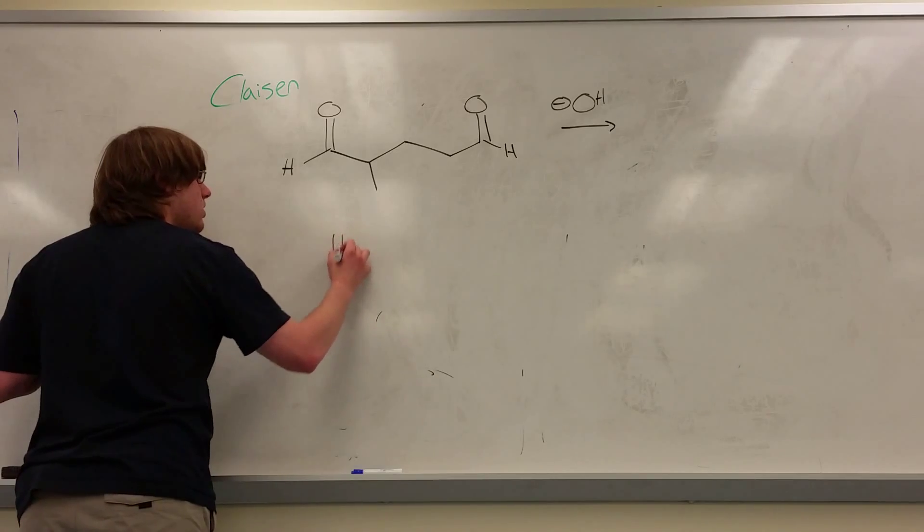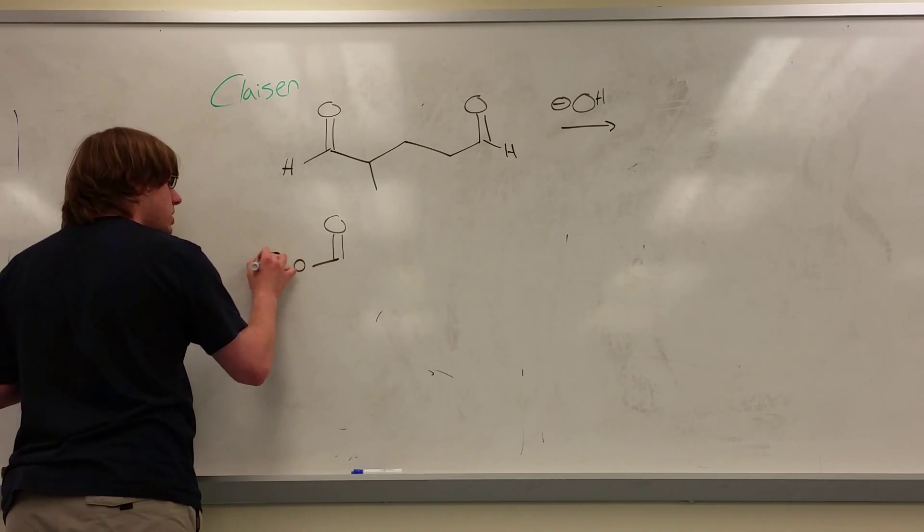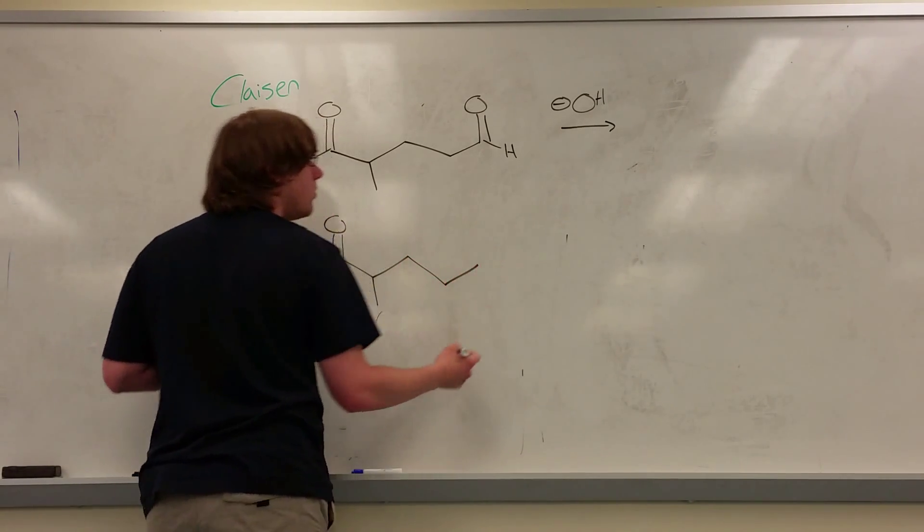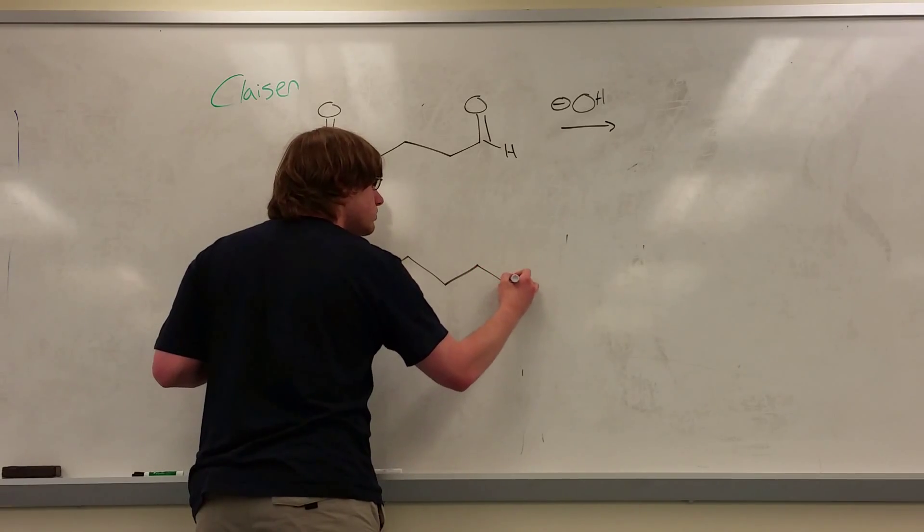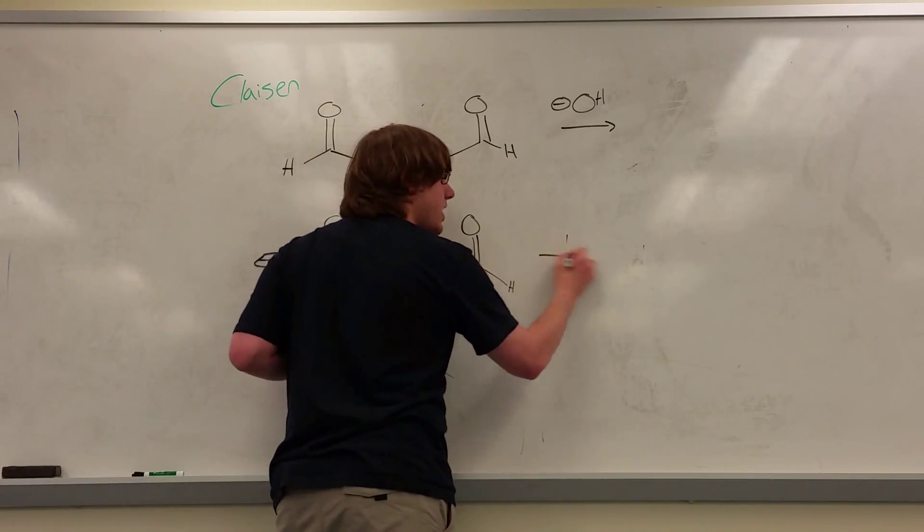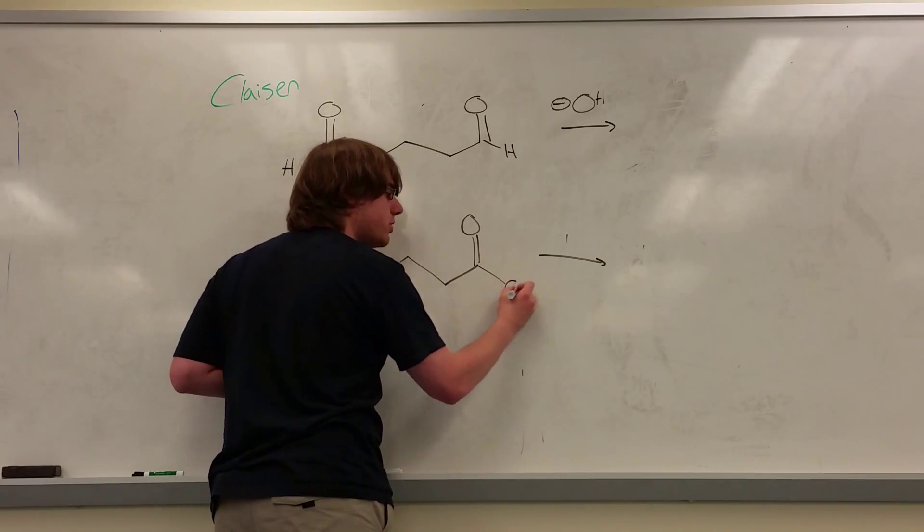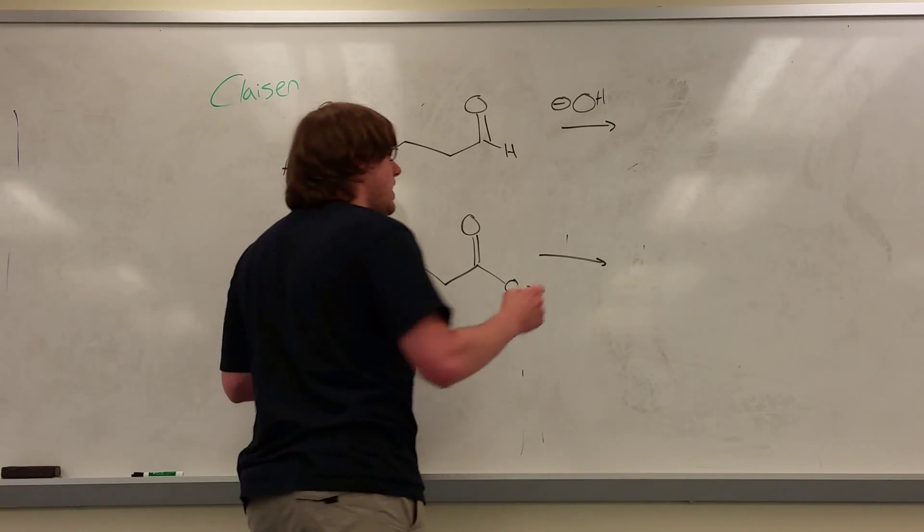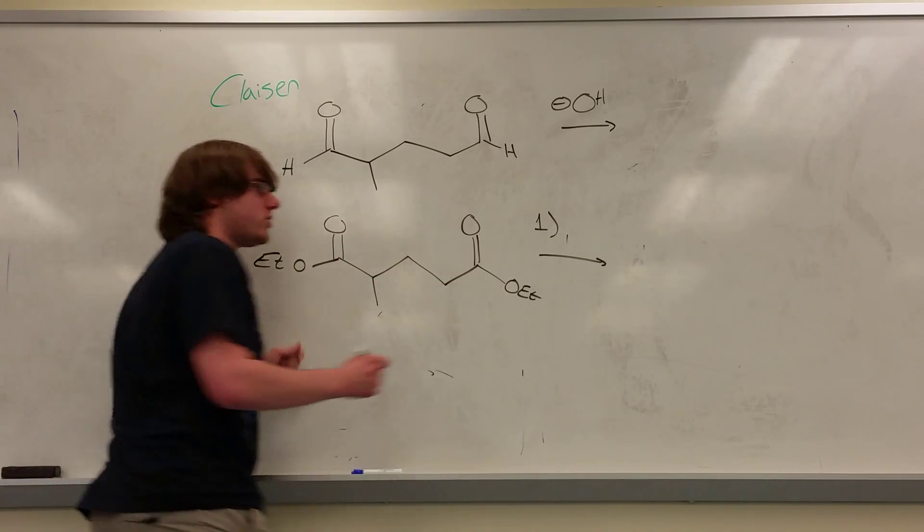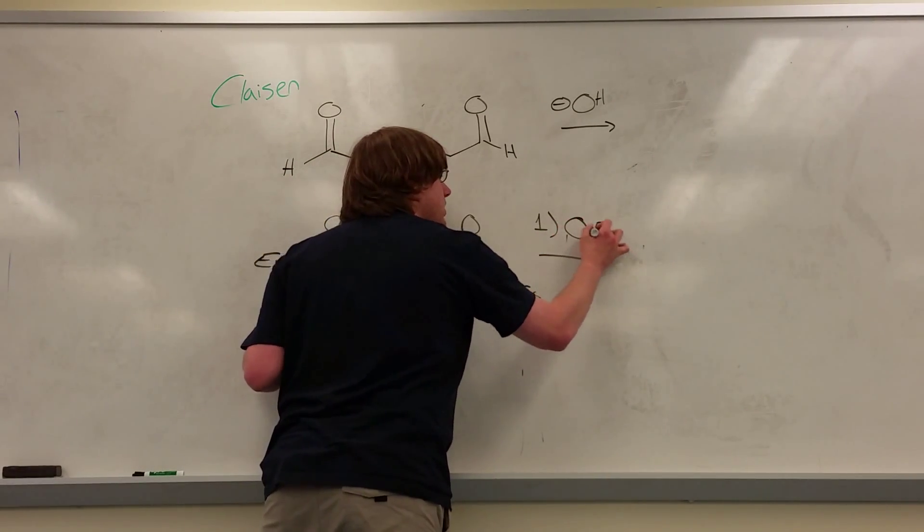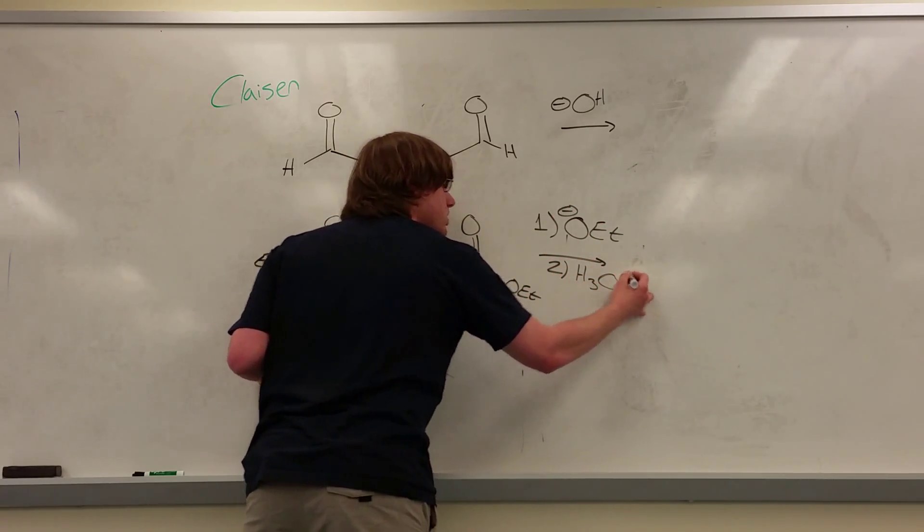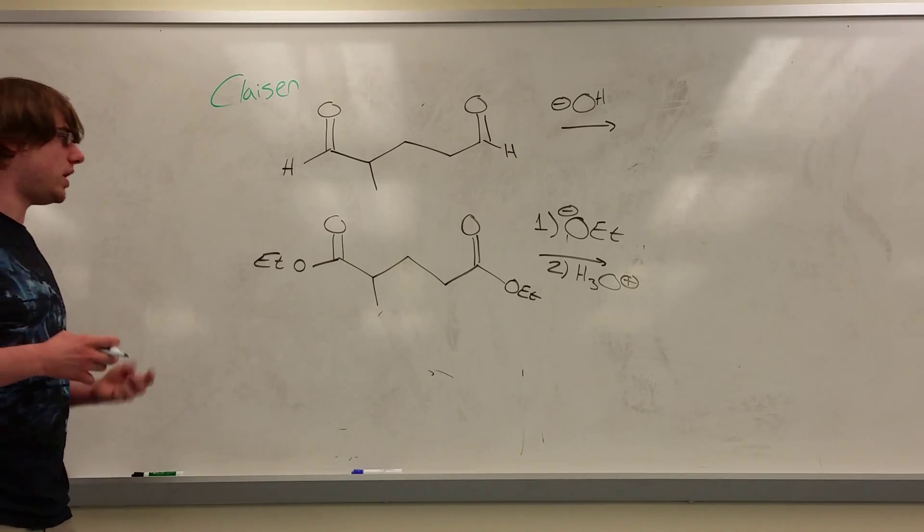Claisen reactions will always involve esters, two separate esters. It could be any OR group, but what will be over the arrow is step one, a base, and that base will always be the same OR group as your ester. So OET minus, step two, H3O positive. These are the two key things that separate an aldol from a Claisen.